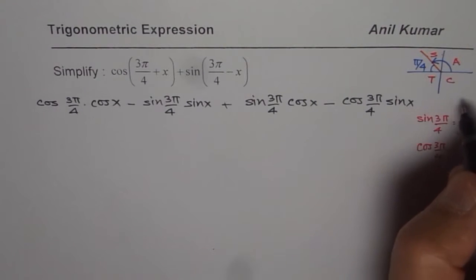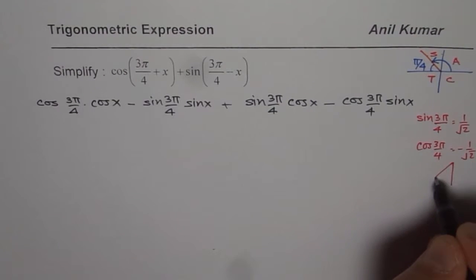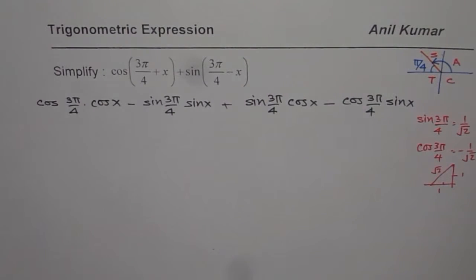3π/4, acute angle is π/4, you can consider the isosceles triangle: 1, 1, √2. So that is what we are going to consider.